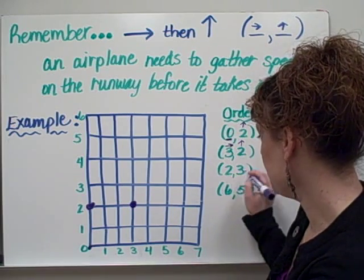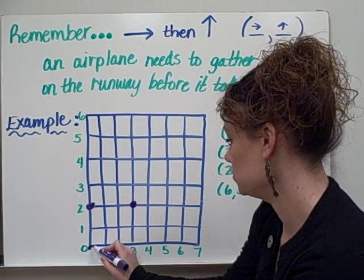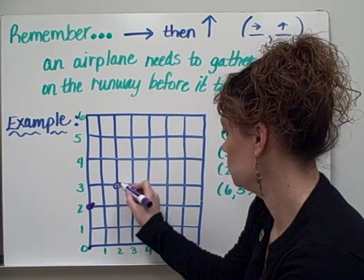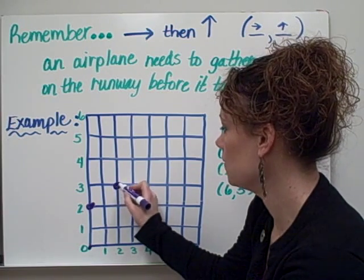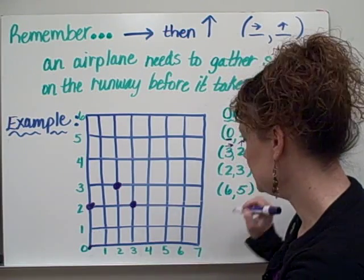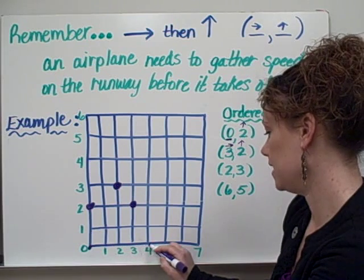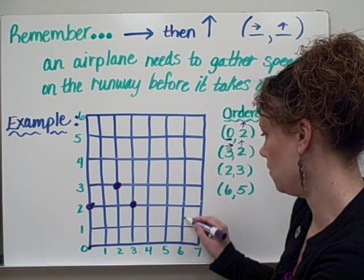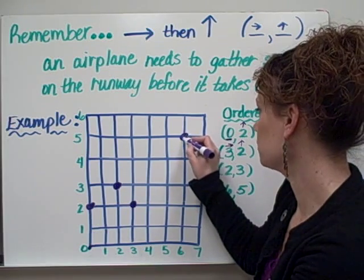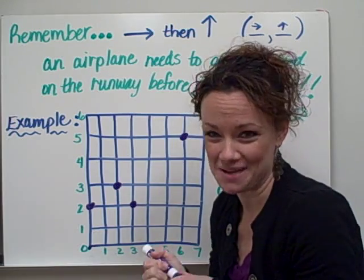My next example is 2, 3. So again, I'm going to go horizontally first over 2 spaces and up 3 spaces. So 2, 3 would be located right here on my coordinate grid. And finally, I have 6, 5. So I go horizontally just like an airplane would first and then I go up 5. And here is what 6, 5 would look like. Pretty simple, as long as you remember your little airplane roll and example.